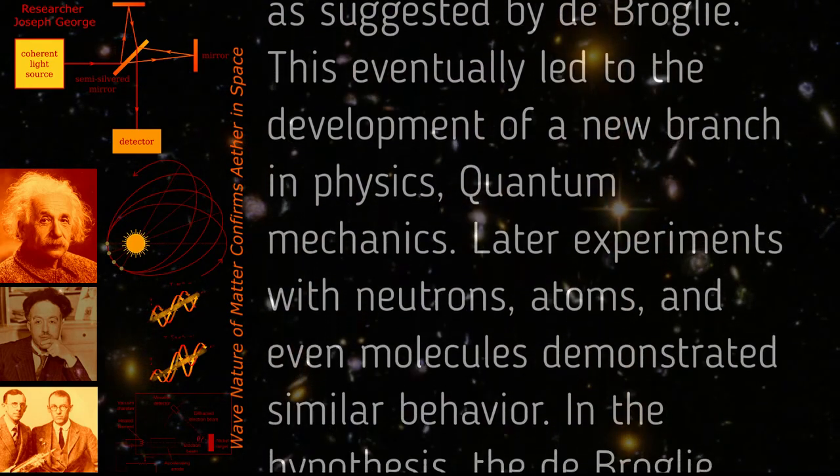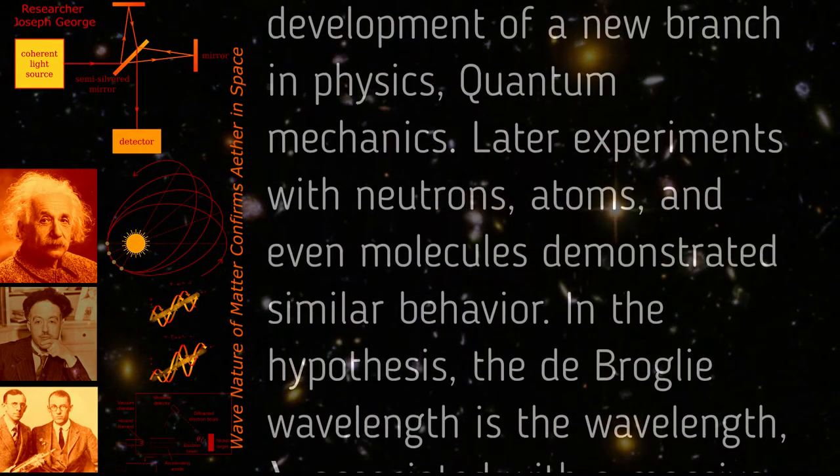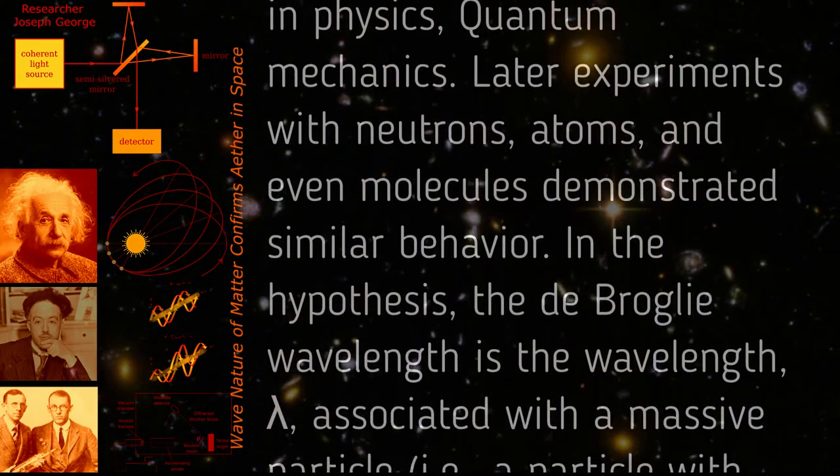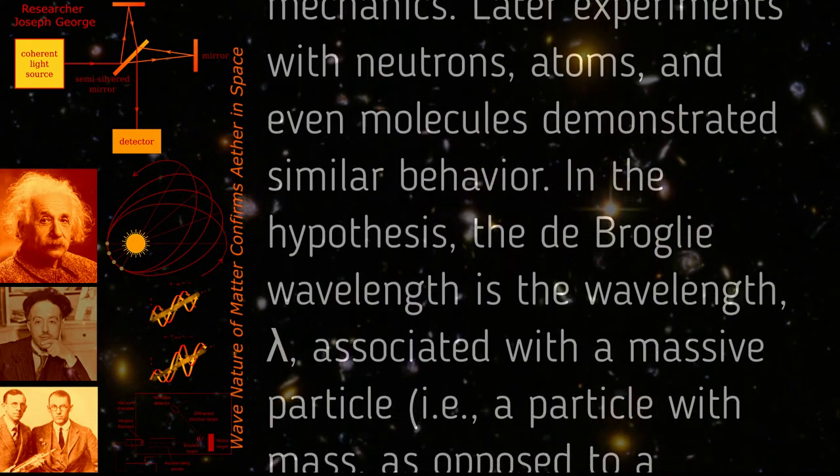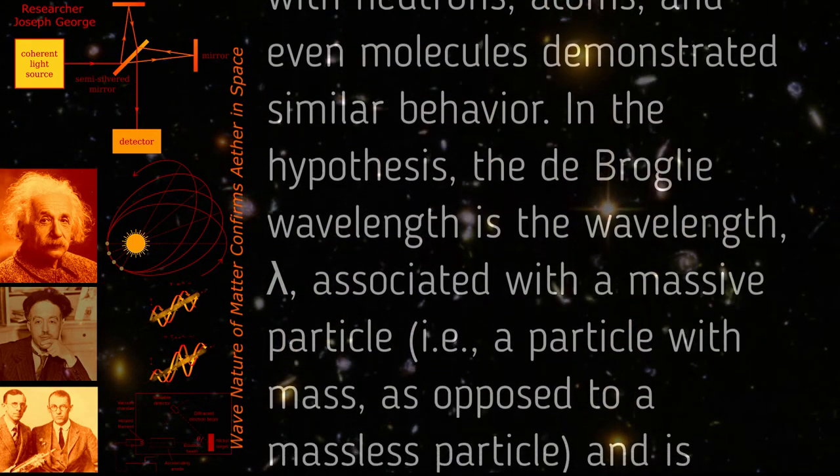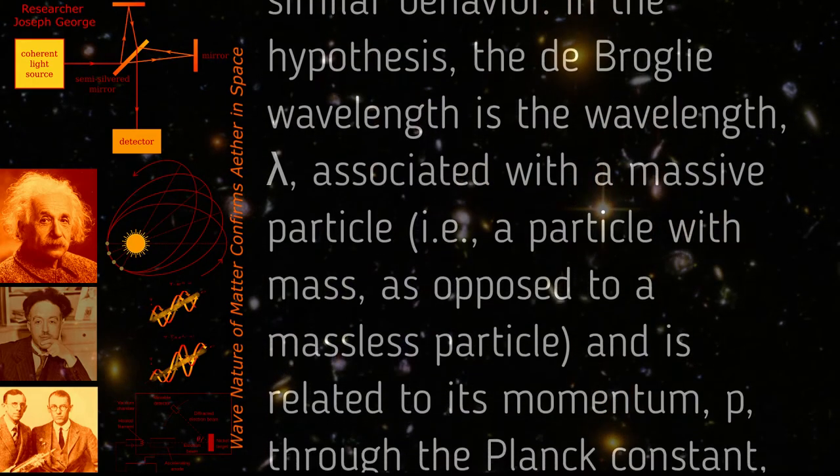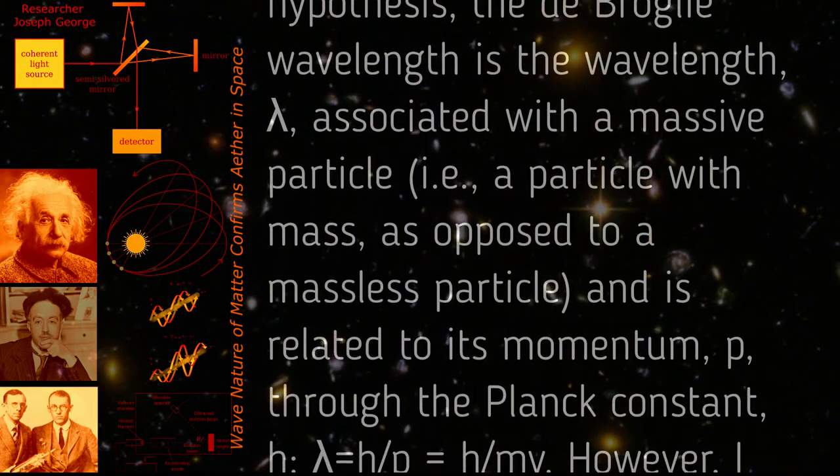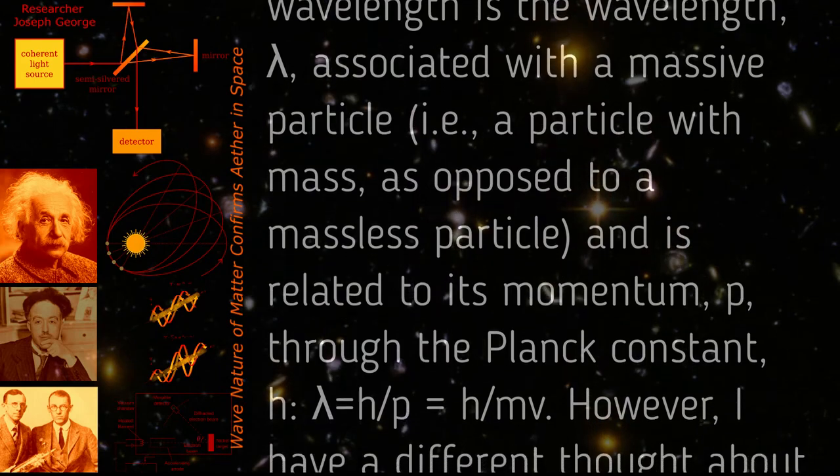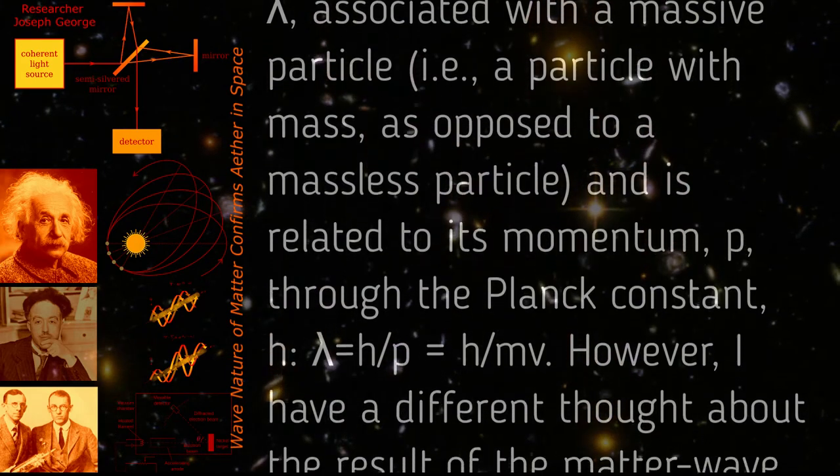This eventually led to the development of a new branch in physics, quantum mechanics. Later, experiments with neutrons, atoms, and even molecules demonstrated similar behavior. In the hypothesis, the de Broglie wavelength is the wavelength lambda associated with a massive particle and is related to its momentum p through the Planck constant h: lambda equals h slash p equals h slash mv.